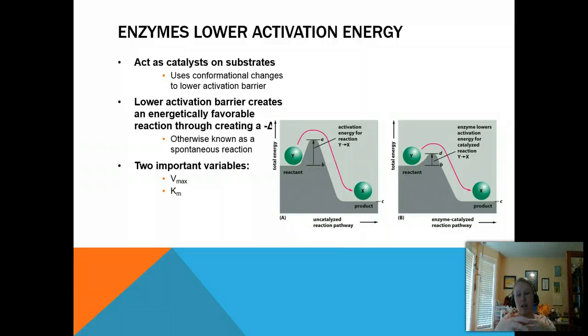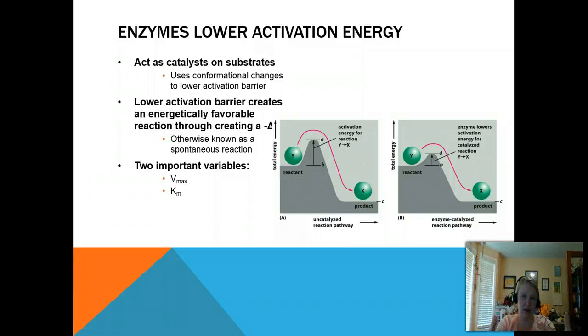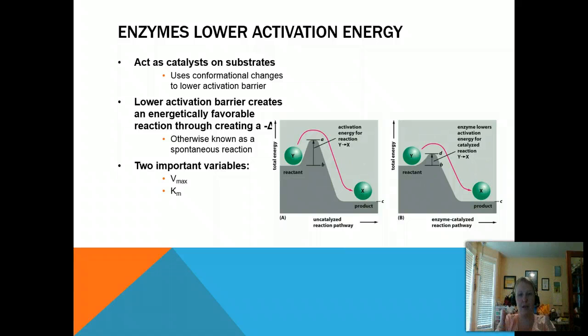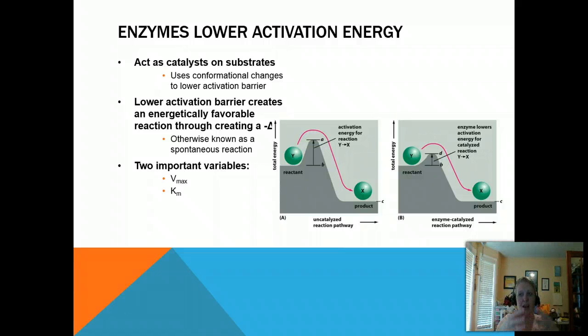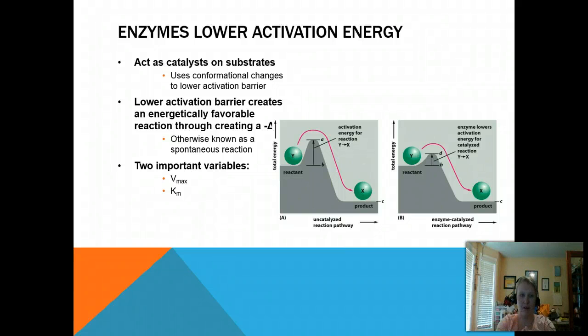So let's look a little bit about how they lower the activation energy. So you can see here, and this is a classic drawing of activation energy. So what you see is this big hump and Y has to get over this hump to become X. Well, it's highly unlikely that's going to happen because that's a lot of energy that would need to go into the system. So what happens instead is that enzymes help change Y to an extent so that that hump is lessened, which means that less energy has to go into the system to produce X. And so that is how the enzyme works.